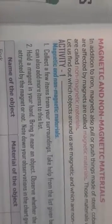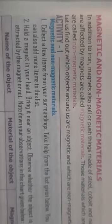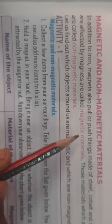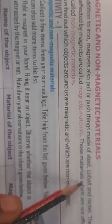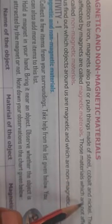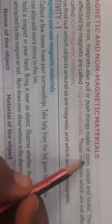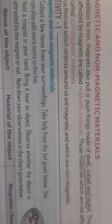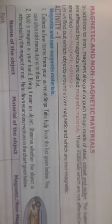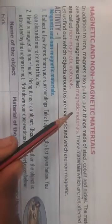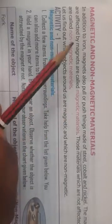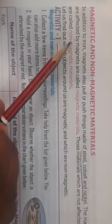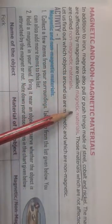In addition to iron, magnets also push or pull things made of steel, cobalt, and nickel. The materials which are affected by magnets are called magnetic materials, or you can say the materials which get attracted by magnets are called magnetic materials.